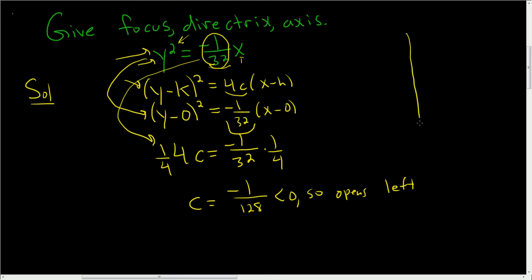So in this case, here's the picture. The vertex is (0, 0). That's obvious, right? (0, 0). HK is the vertex, (0, 0). And it opens left. Boom, there it is. It opens left. Now, the absolute value of c is 1/128. And that tells us how far to go to find the focus from the vertex.